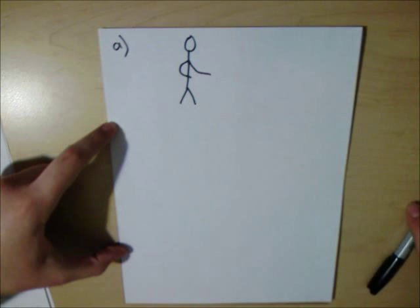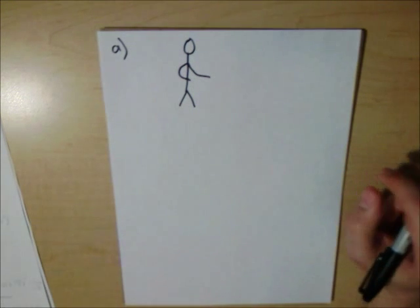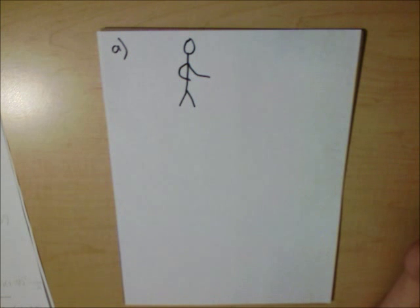So for part A, the question is: on the diagram below, draw and identify the forces on the rider when the system is rotating and the floor has dropped down.